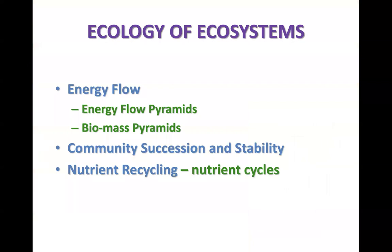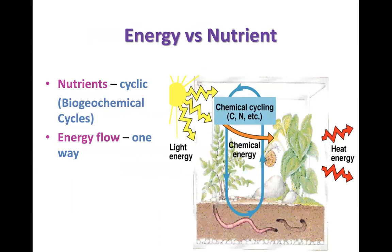We can consider ecology from the standpoint of ecosystems. As I said before, ecosystems is the level at which we're now able to take into account not only biotic factors but also abiotic factors — both living and non-living factors within this ecosystem. We'll look at this energy flow pyramid and the idea of nutrient cycling. There are many different cycles that take place to sustain and maintain ecosystems. We have nutrient cycling with cyclic biogeochemical cycles, and then energy flow — this one-way directional flow of energy from the sun down to producers and over to consumers.